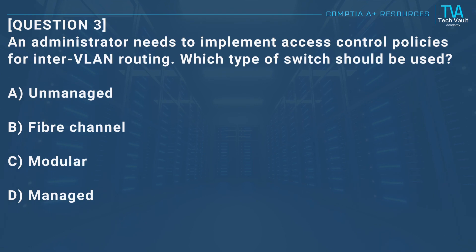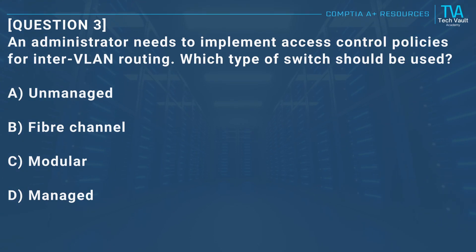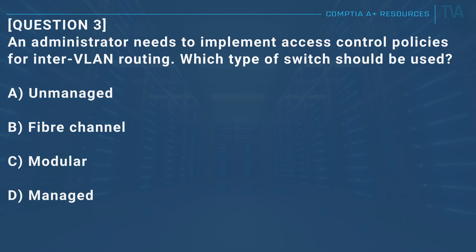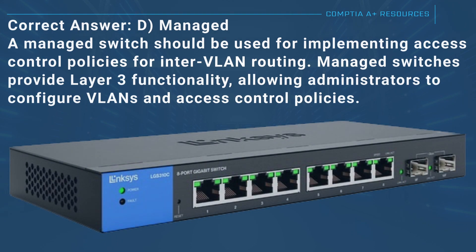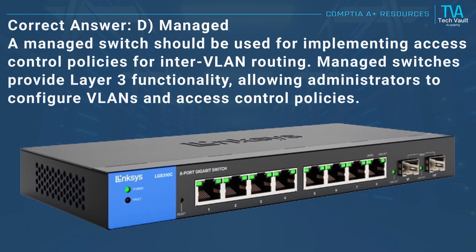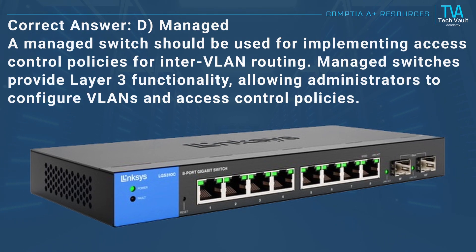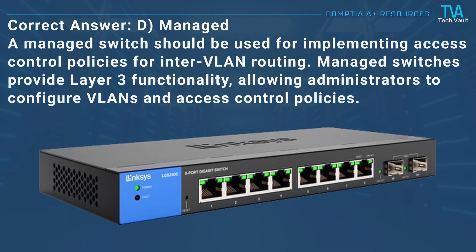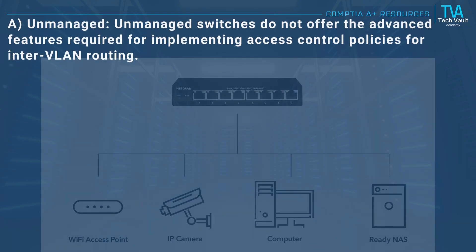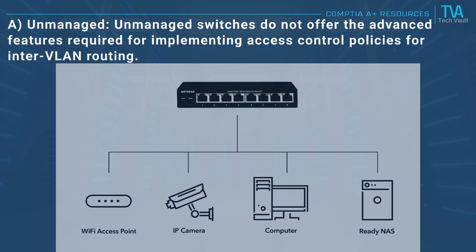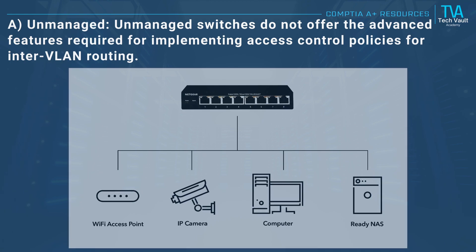Question 3: An administrator needs to implement access control policies for inter-VLAN routing. Which type of switch should be used? A, unmanaged. B, fiber channel. C, modular. D, managed. Correct answer: D, managed. A managed switch should be used for implementing access control policies for inter-VLAN routing. Managed switches provide layer 3 functionality, allowing administrators to configure VLANs and access control policies. A, unmanaged: unmanaged switches do not offer the advanced features required for implementing access control policies.